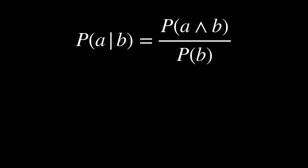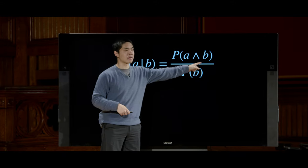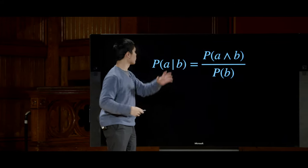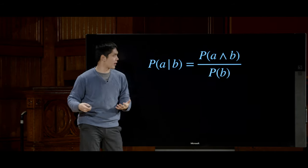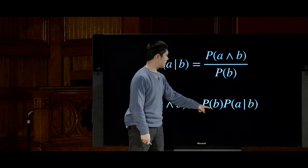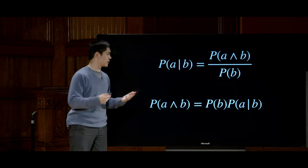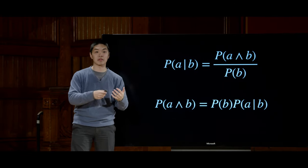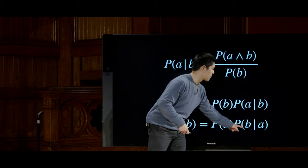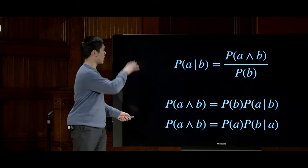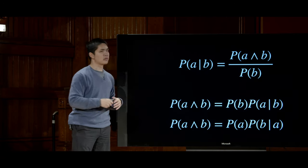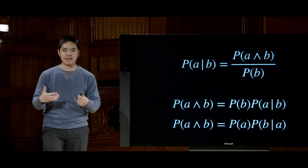This definition of conditional probability will come up again and again. The formula P(A | B) = P(A and B) / P(B) can be algebraically rearranged to: P(A and B) = P(B) × P(A | B), or equivalently P(A and B) = P(A) × P(B | A), since A and B is the same as B and A. These three are all equivalent ways to represent joint probability, and you'll see all of them used.